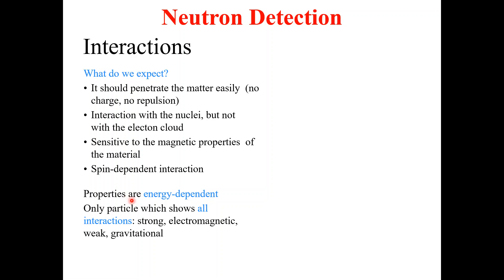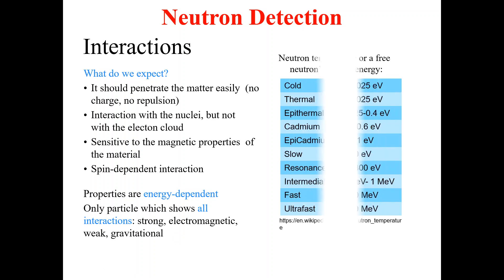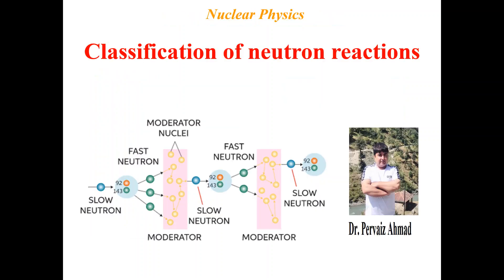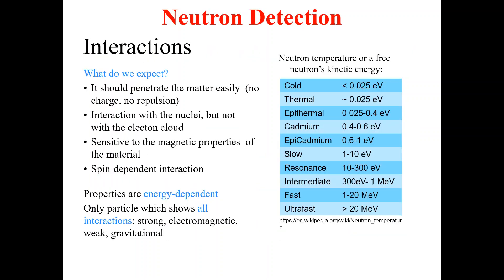The properties of neutron interactions are energy-dependent. The neutron is the only particle which shows all interactions: strong, electromagnetic, weak, and gravitational. These are some of the expectations for what happens when neutron interactions occur with detection materials.